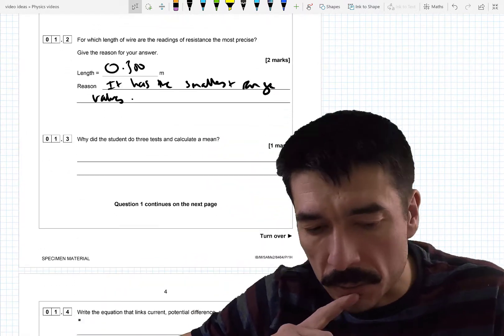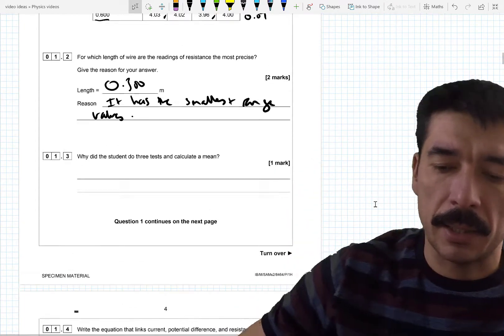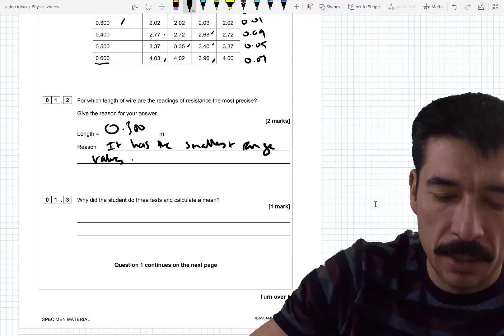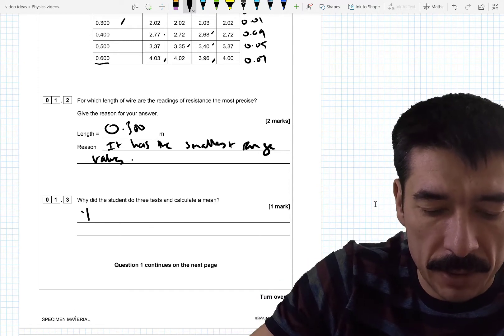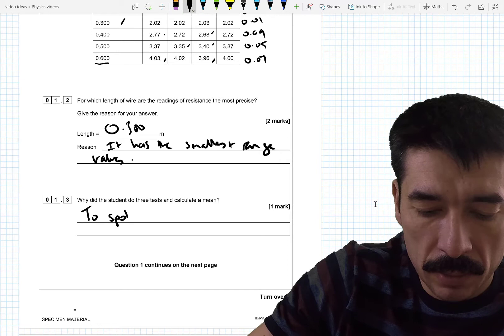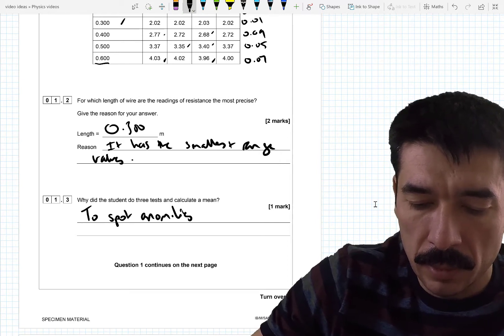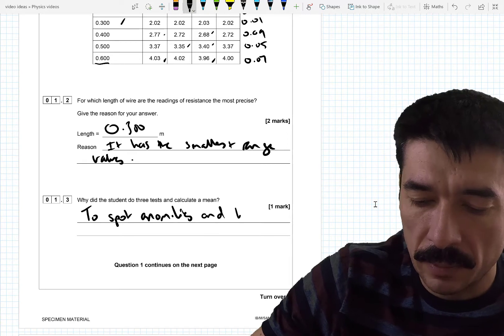Why did the student do three tests and calculate the mean? So common sense, sort of sciency common sense would say to avoid, to spot anomalies. And have a chance to remove them.